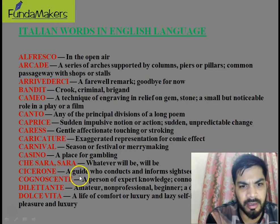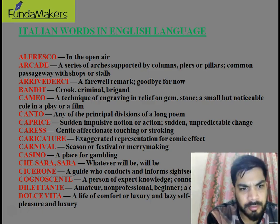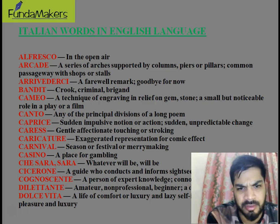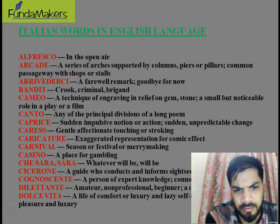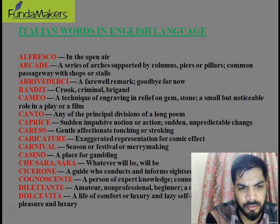'Cicerone' is a guide who conducts or informs sightseers — basically a guide. 'Cognoscenti' is a person of expert knowledge — somebody who is very, very good at some subject. 'Dilettante' is an amateur, non-professional, a dabbler or tyro — somebody who is not polished at a profession. 'Dolce vita' — vita means life and dolce means luxury — is a life of comfort or luxury.